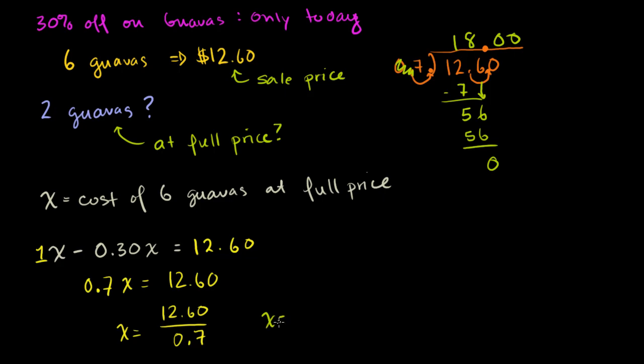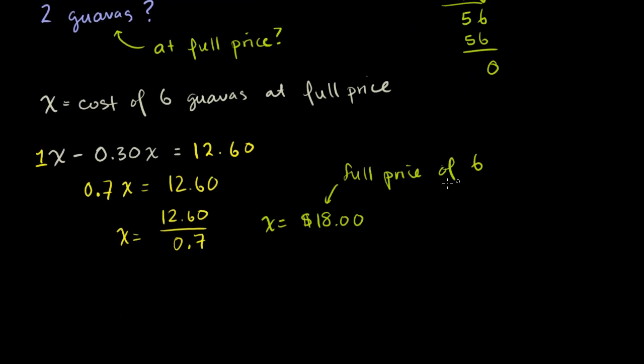So x is equal to $18. Remember what x was. x was the full price of six guavas. x was the full price of six guavas. Now, the question is, how much will two guavas cost me at full price? Well, this is full price of six. So you immediately could figure out what's the full price of one guava. You divide 18 by six. So 18 divided by six is $3. That's $3 per guava at full price. And they're asking us, we want two guavas. So two guavas is going to be two times $3. So this is going to be $6.